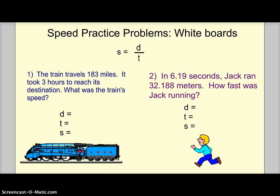Let's see if you can practice now. In number 1, the train travels 183 miles. It took 3 hours to reach its destination. What was the train's speed? Make sure you plug in what was the distance you were given, what is the time you are given. Use your formula speed equals distance over time to find the speed.